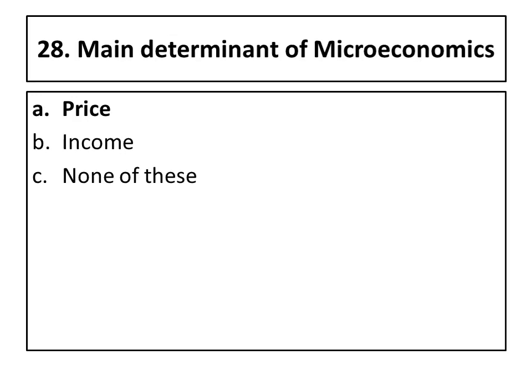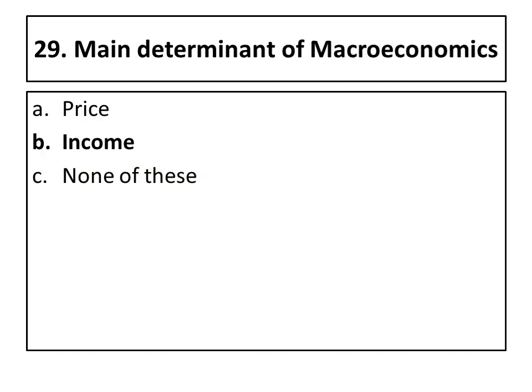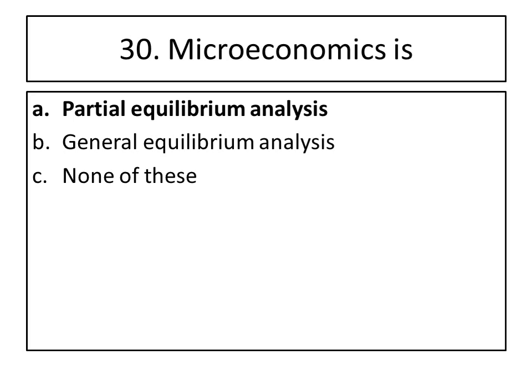Twenty-eighth question: the main determinant of microeconomics is price — the right option is price. We study economic units and small units; price determines the equilibrium level of what will happen and how the consumer will be satisfied. The next question: the main determinant of macroeconomics is income — B is the right answer. Thirtieth question: microeconomics is basically a partial equilibrium analysis — the right answer is A, partial equilibrium analysis.